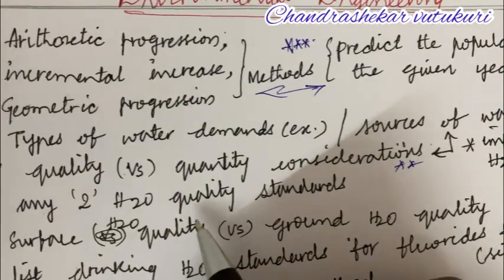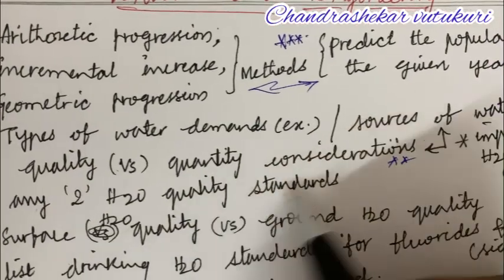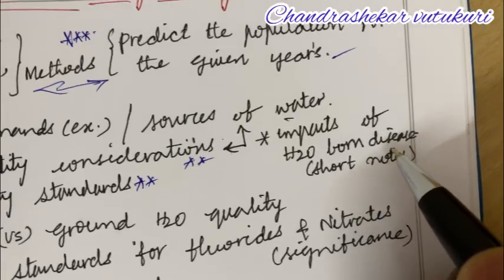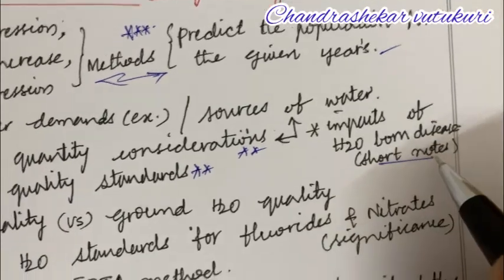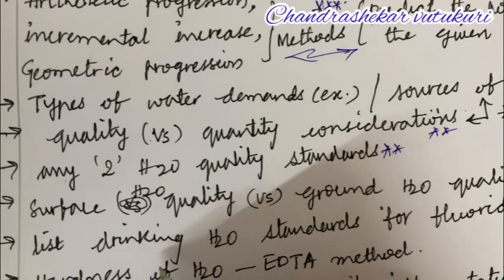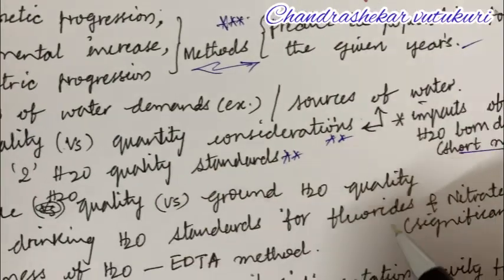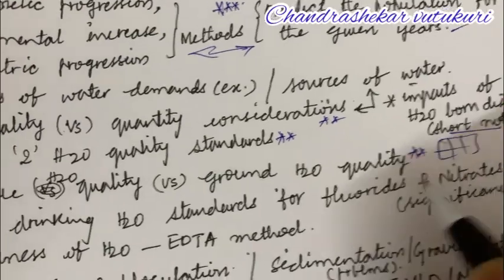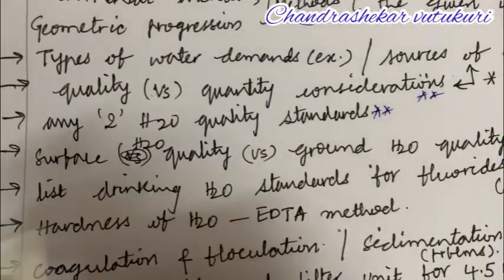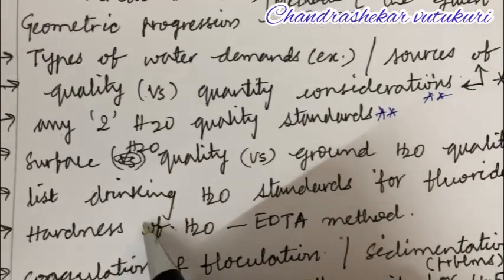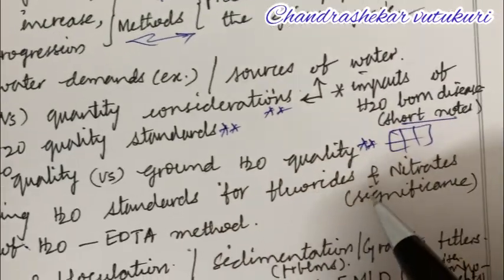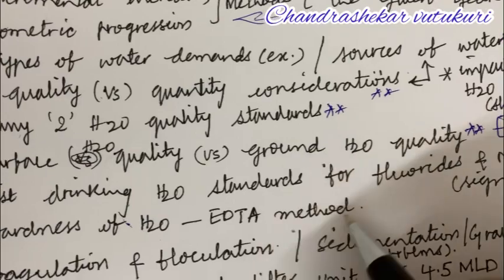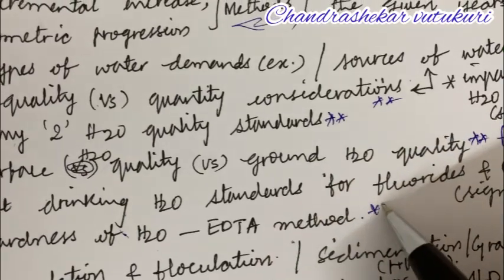List out any two water quality standards is said to be the short question. The impacts of water-borne diseases and short notes to be written is also a short question. Surface water quality versus ground water quality, with differences in a tabular column, is the topmost question in the form of 2A to B or 3A to 3B. List drinking water standards for fluorides and nitrate significance, and the hardness of water related to the ETA method, is also said to be the topmost question.